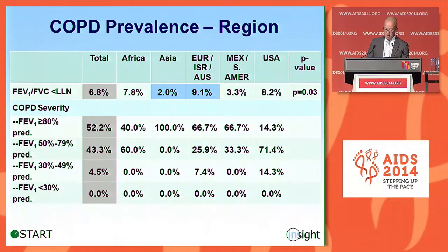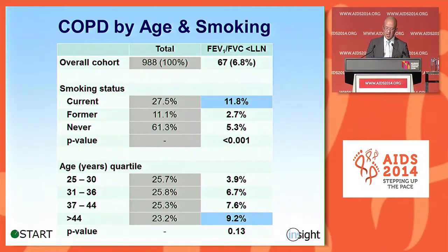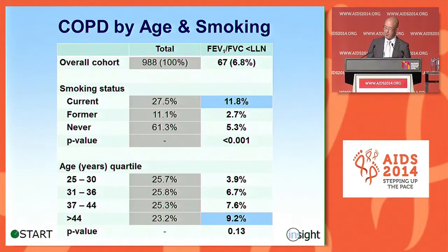When looking by region, we found a lot of variation with ranges as low as 2% in Asia, up to 9.1% in Europe, Israel, and Australia. We also found that COPD varied by both smoking status and age. Among current smokers, nearly 12% had COPD. When we looked at the highest age quartile — above age 44 years — 9.2% had COPD. Also of interest, of those 67 participants with COPD, nearly half of them reported lifelong non-smoking.